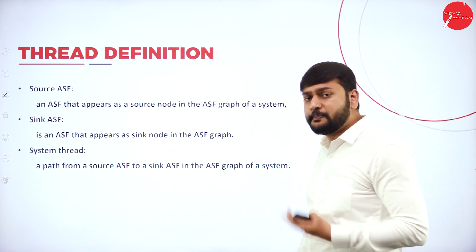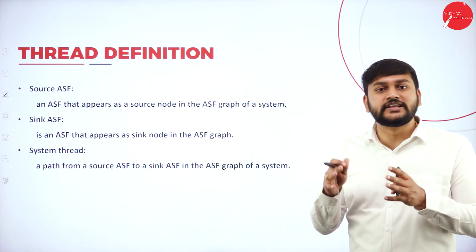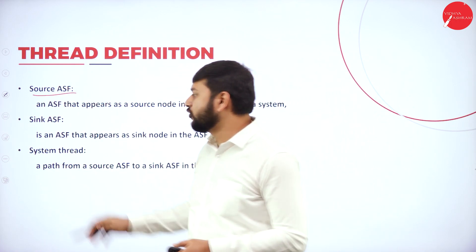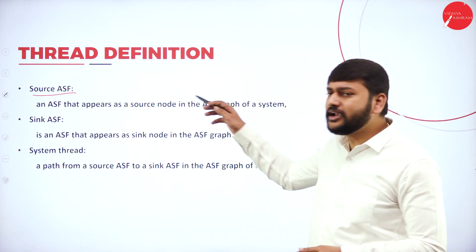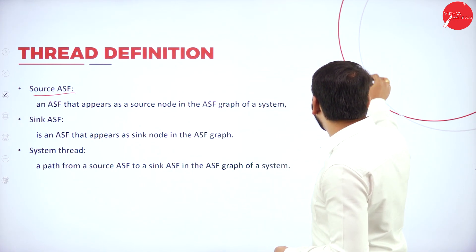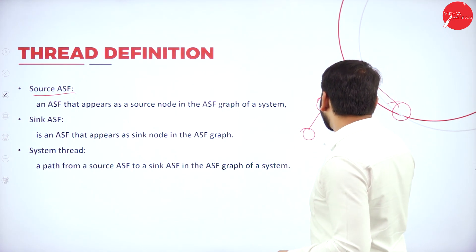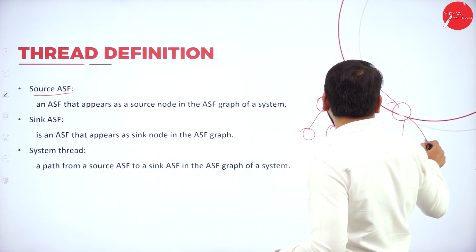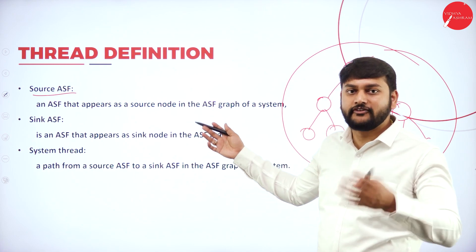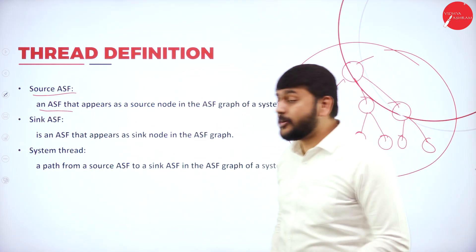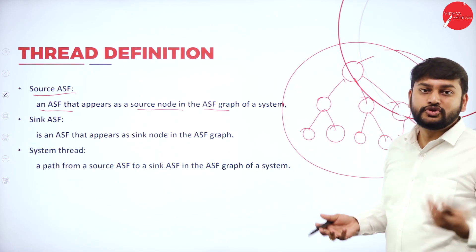Let me give some basic definitions before moving to the next topic. The first definition is source ASF. When it comes to source ASF — imagine a tree with the root node being the main system. The root node is what I call the source ASF in the graph. Formally: an ASF that appears as a source node in the ASF graph of a system is called a source ASF.